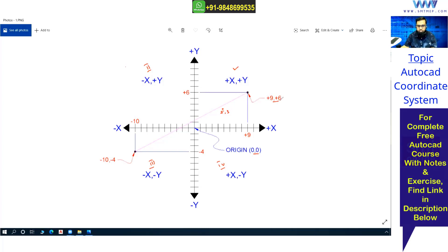Very basic, right? As an engineer, you're already aware of this coordinate system, but I'm showing it again because we'll use the same in AutoCAD. Remember, in the first quadrant, X is positive and Y is also positive.